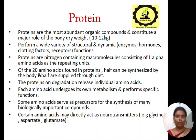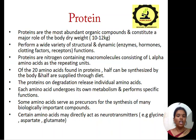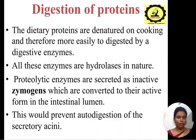Of the 20 amino acids found in proteins, half can be synthesized by the body and half are supplied through diet. The proteins on degradation release individual amino acids. Each amino acid undergoes its own metabolism and performs specific functions. Some amino acids serve as precursors for the synthesis of many biologically important compounds. Certain amino acids may directly act as neurotransmitters, e.g., glycine, aspartate, and glutamate.